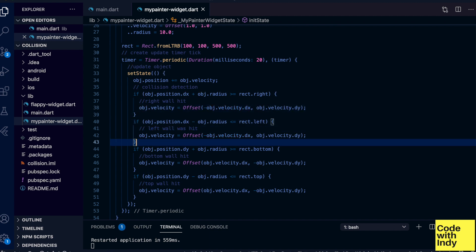Then comes the collision detection. Each of these conditionals are what we derived earlier. They check if the object had collided with right, left, bottom, and top walls. If they have, the corresponding velocity is inverted.